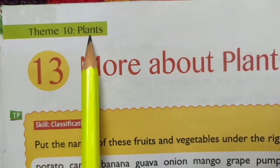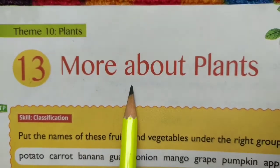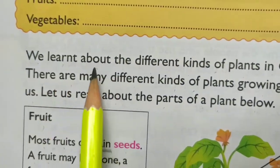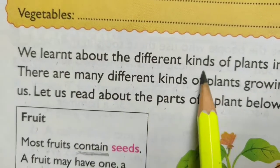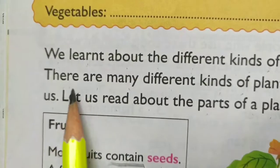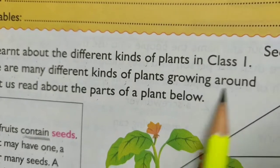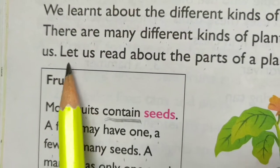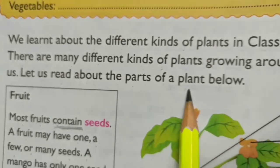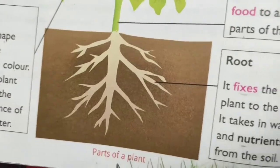Theme 10, Plants. Chapter 13: More About Plants. We learnt about the different kinds of plants in class 1. There are many different kinds of plants growing around us. Let us read about the parts of a plant below.